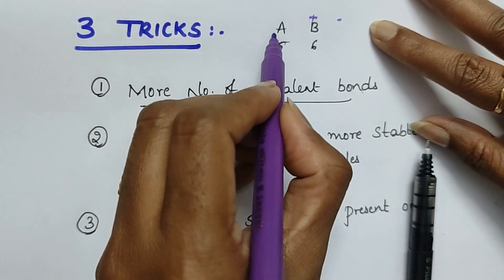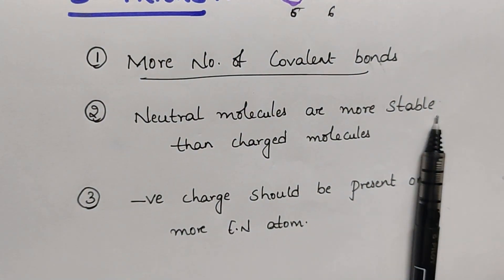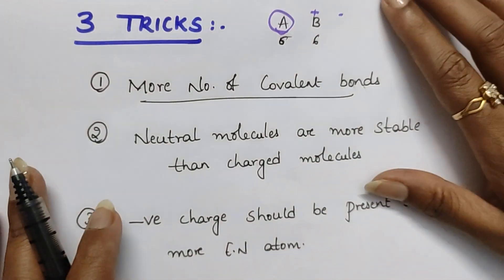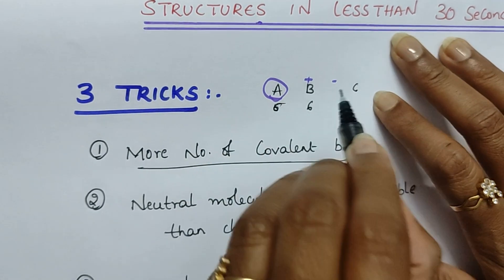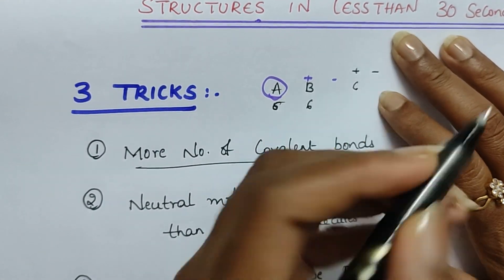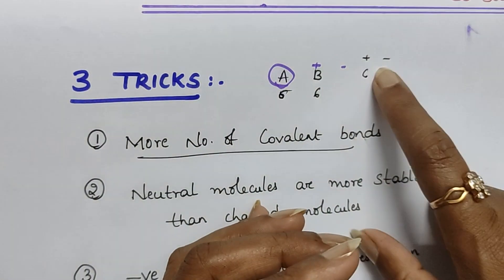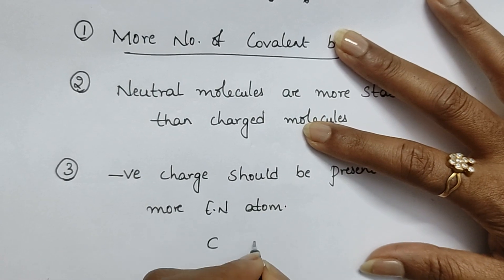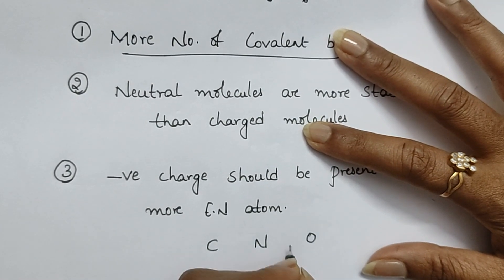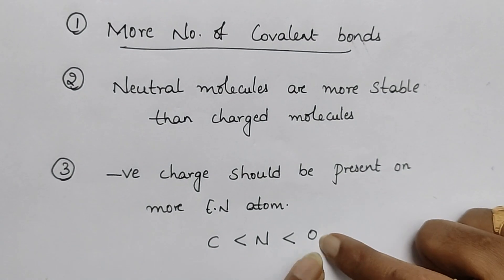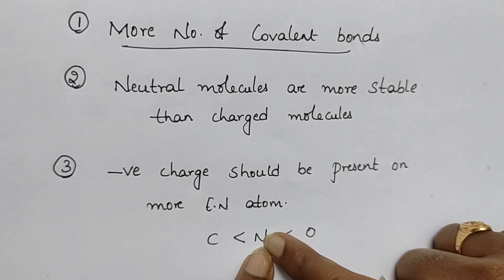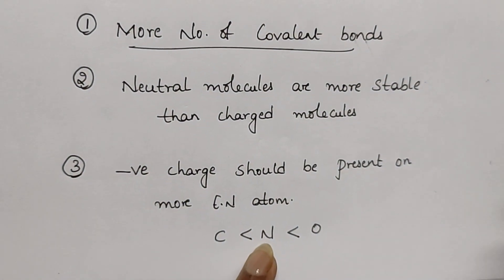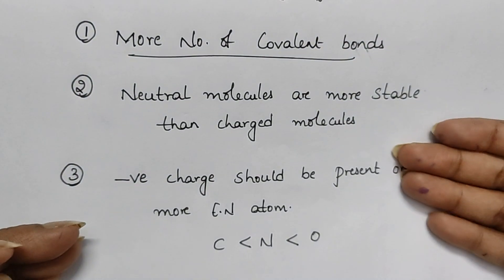Trick number three: negative charge should be present on the more electronegative atom. For example, carbon, nitrogen, oxygen — which is more electronegative? Oxygen is more electronegative, then nitrogen. Electronegative atoms should always have the negative charge. That's it — within two minutes I completed these three tricks.